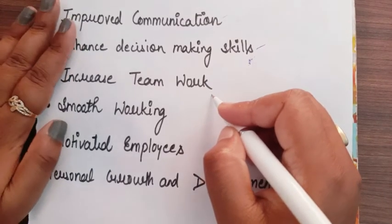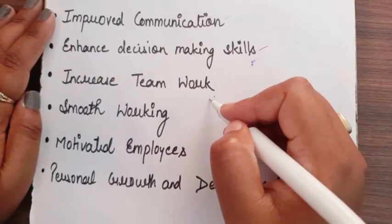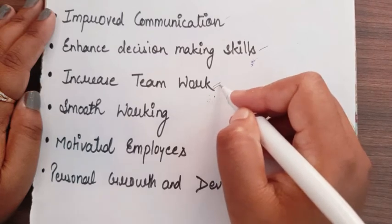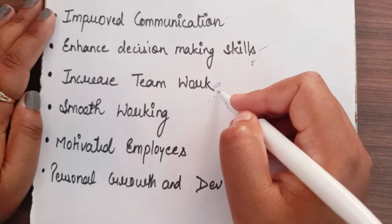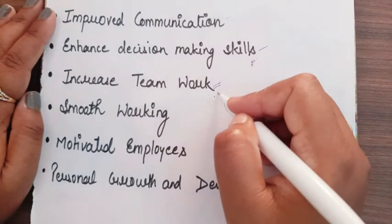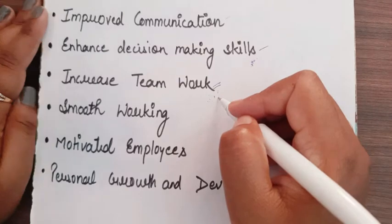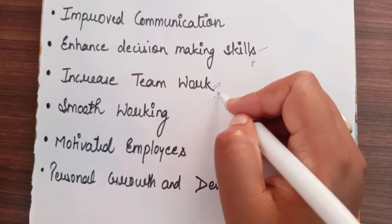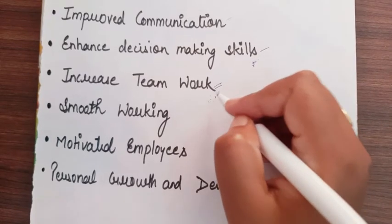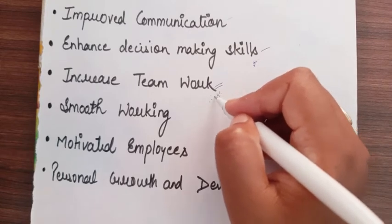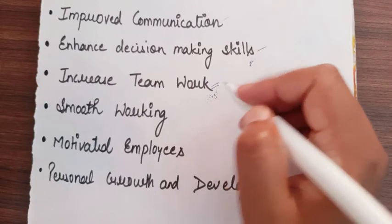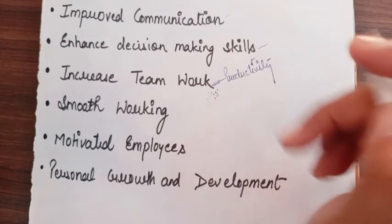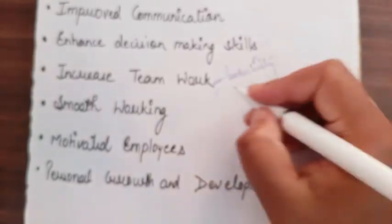The next benefit is increased teamwork. In quality circles, employees focus on group objectives rather than individual objectives, so team spirit is developed and teamwork starts to develop. When employees know their responsibilities and what particular work they have to do, they become accountable and stop working individually, starting teamwork instead. As a result, your organization's productivity will be enhanced — that is the ultimate benefit for your organization.